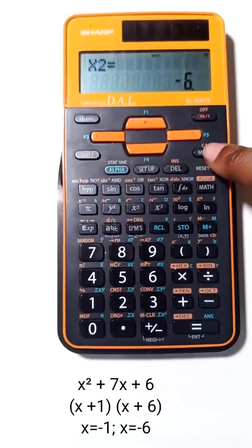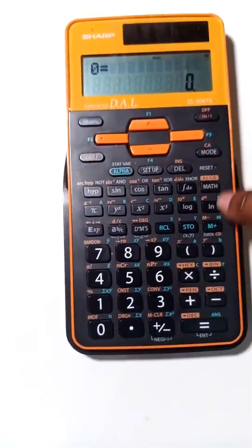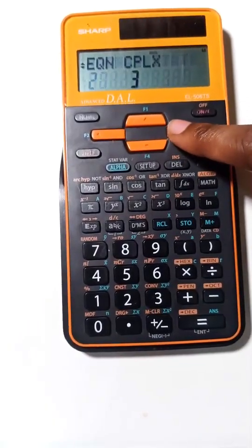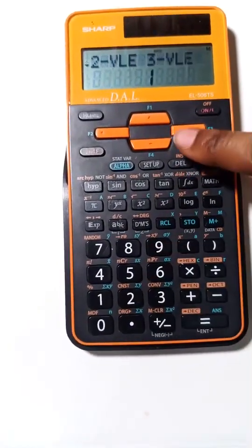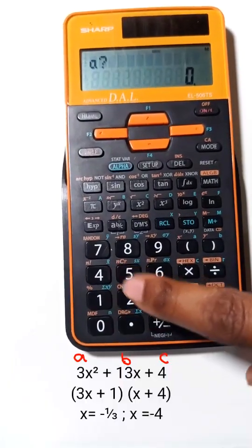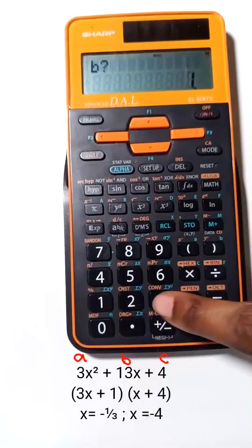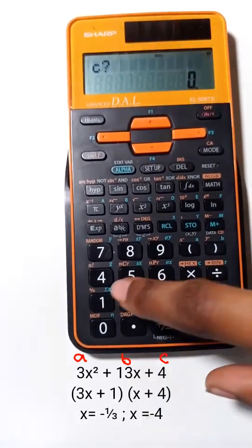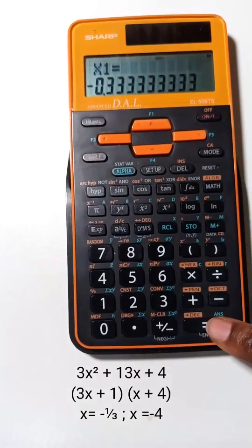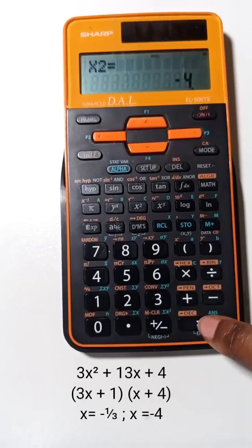To get it back to normal, we press mode 0. Let's do our next example. Mode. Use right arrow. Equation. Right arrow. Quadratic. A is 3. B is 13. And C is 4. X is equal to negative 1 and 3, 0.333. And x is equal to negative 4.